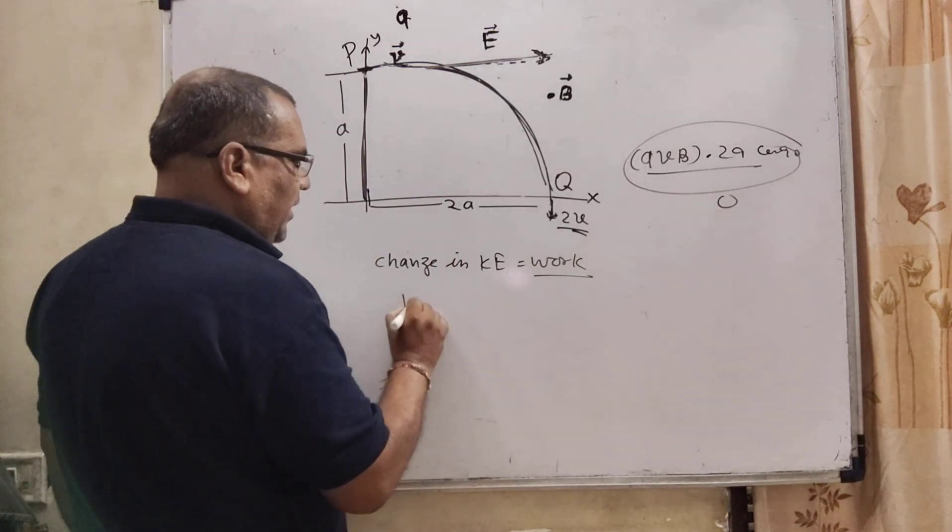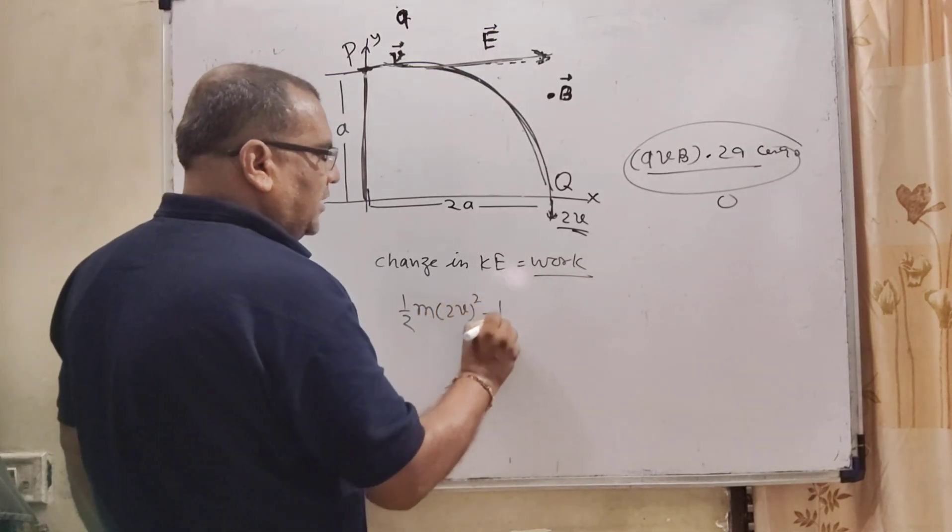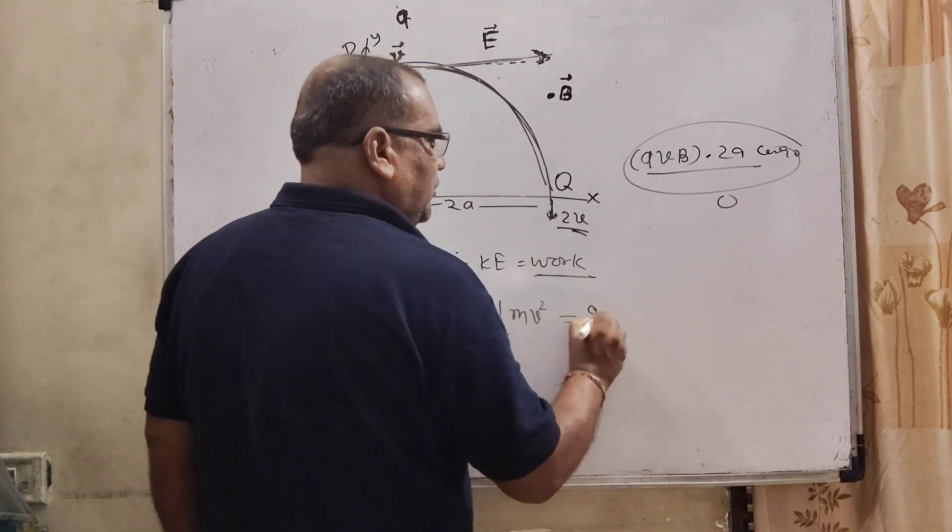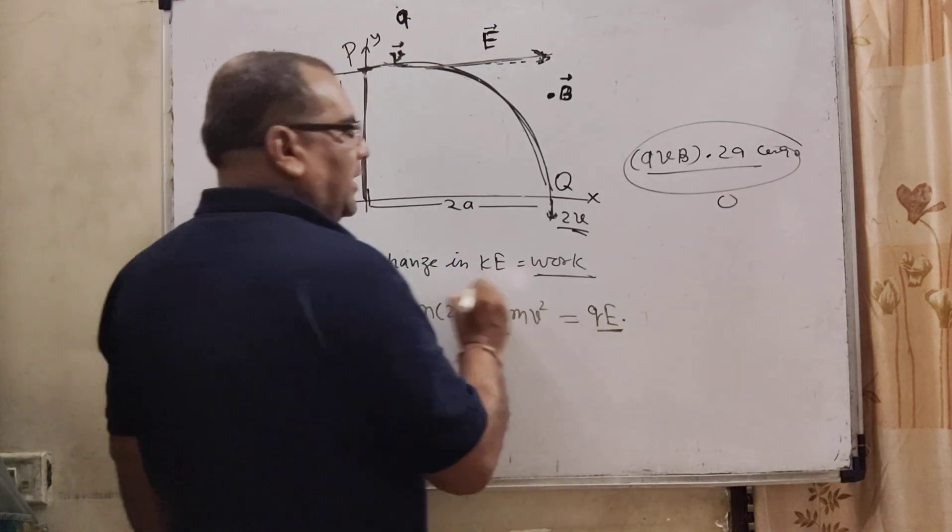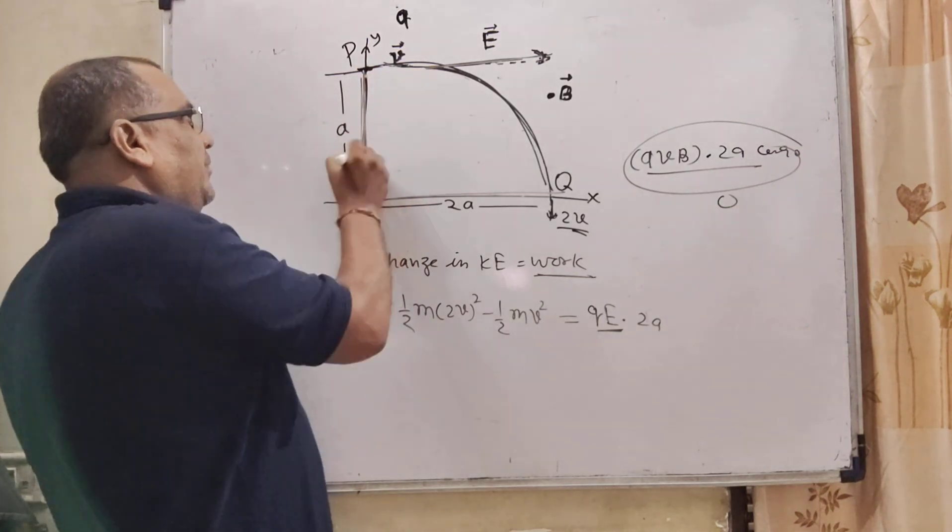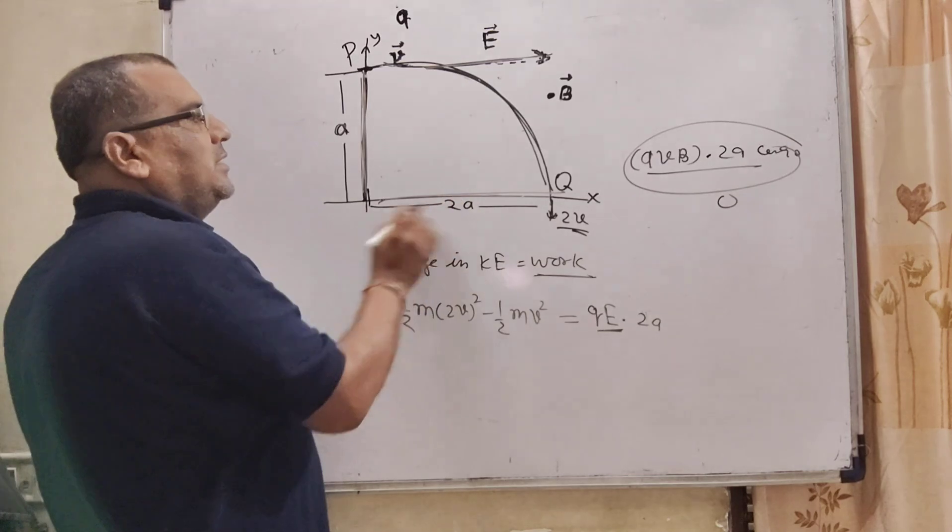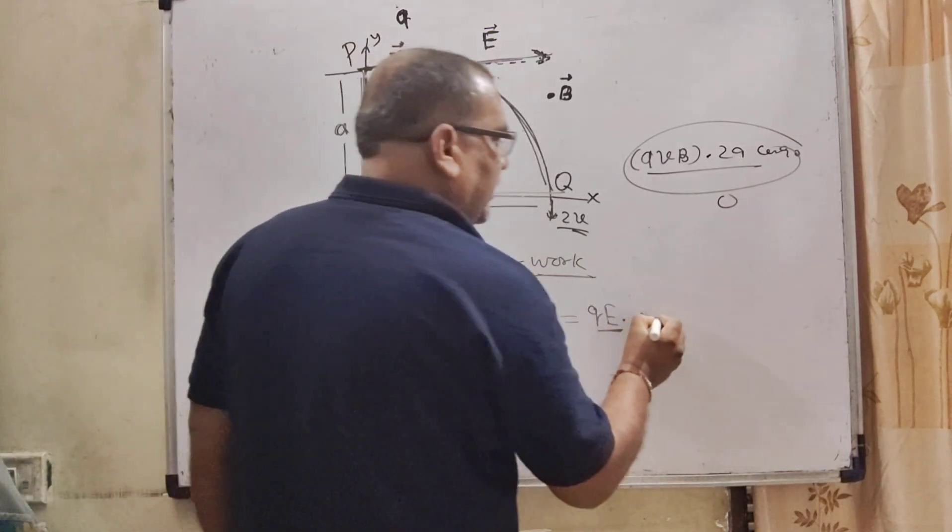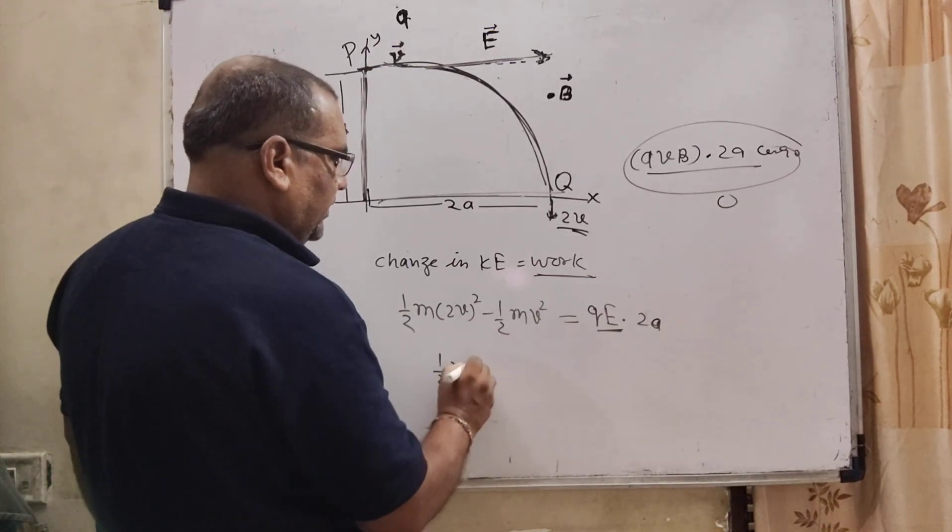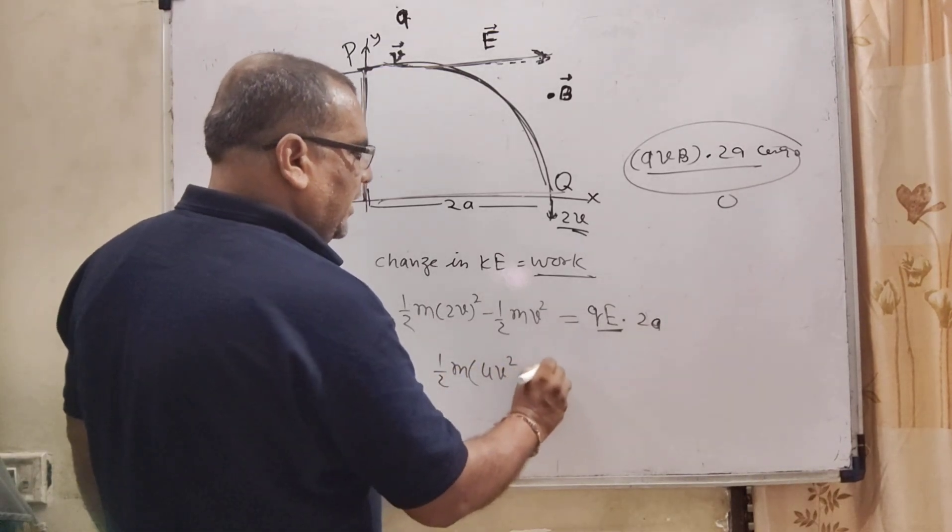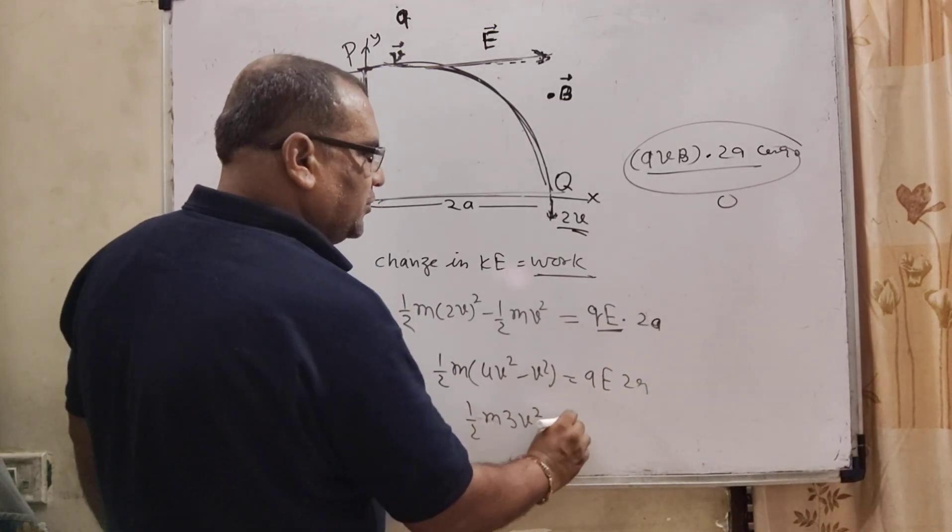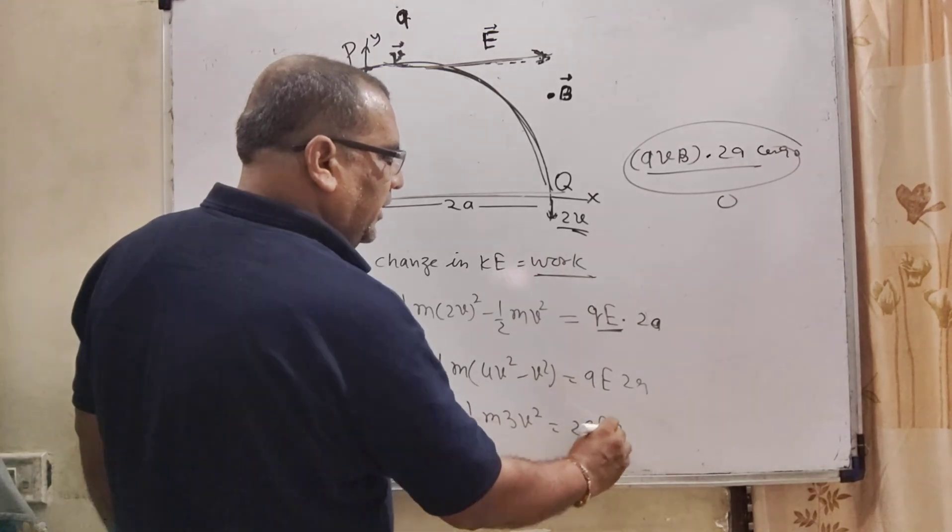Change in kinetic energy: 1 by 2 M times 2V square minus 1 by 2 M V square is equal to the work done by electric field, that is Q E and displacement that is 2A in the X direction. Because here, the A direction is perpendicular from the X axis, so we have to take only the X direction. So 1 by 2 M, taking common, 4V square minus V square equals Q E times 2A. Then 1 by 2 M times 3V square equals 2 Q E A.